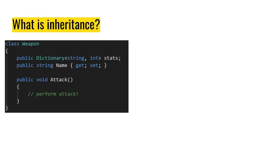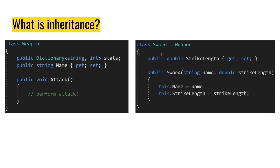Let's look at this quickly. I'll define a weapon class — it has a stats list or dictionary, it has a name property, and it has an attack method. My staff and my sword also have this functionality. So what I want to do is take sword and inherit from weapon. So now sword has an attack method, a name, and stats. That's how inheritance works — I have a colon and then the name of the class, the type of class that I'm inheriting from.